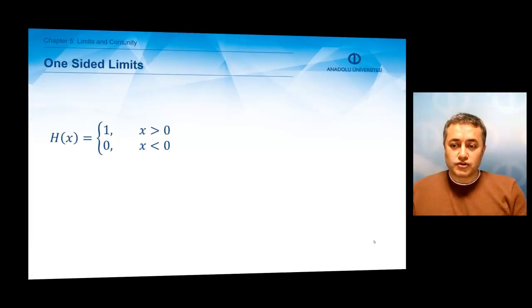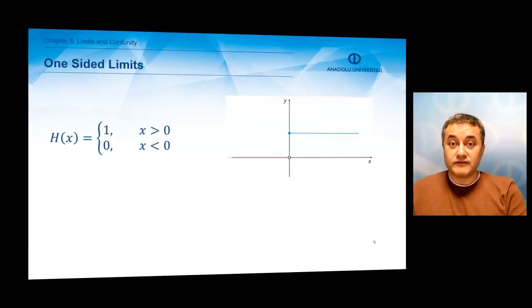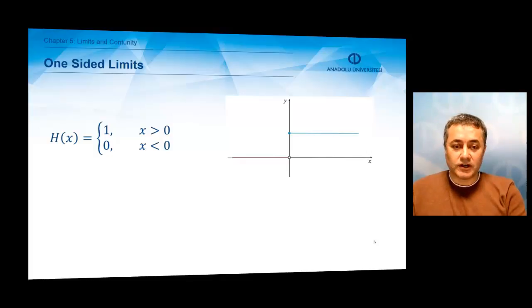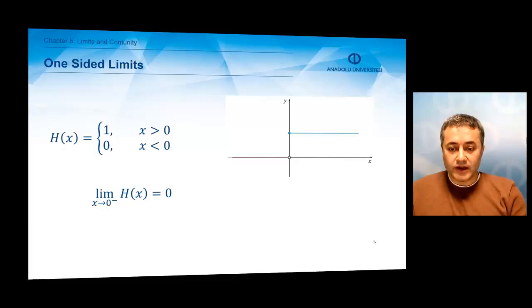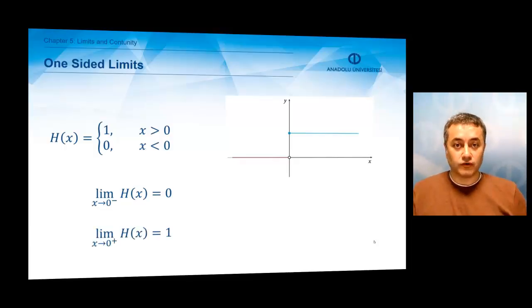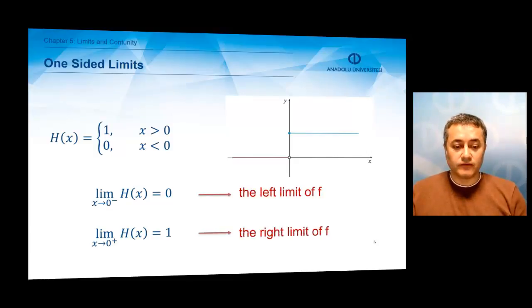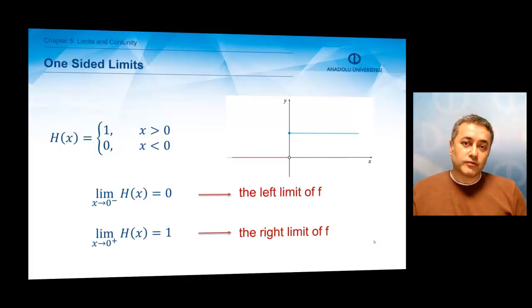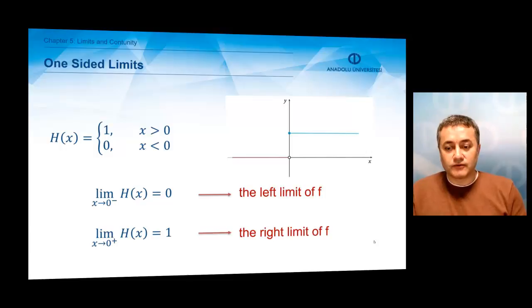Now let's go to one-sided limits. We can approach — this is a very important and very famous function, h(x), which is called the Heaviside function, named after a British engineer. h(x) is 1 if x is greater than 0, and 0 if x is less than 0. At x equals 0, the function jumps from 0 to 1. We can approach x equals 0 from the left, so the limit of the function is 0, or from the right, and the limit of the function is 1. The first limit when approaching a point from the left is called the left limit of a function, and if you are approaching x₀ from the right, this limit is called the right limit of the function f.